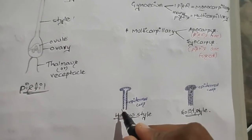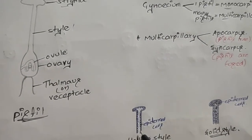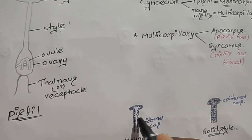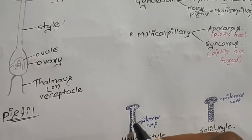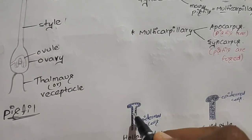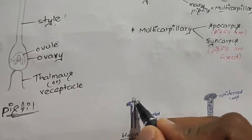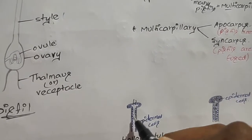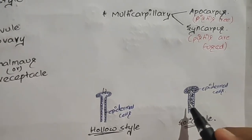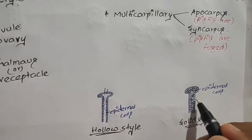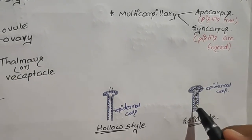In the hollow style, the outer layer is surrounded by epidermis cells, and in between this outer surface a luminal space is present. In this space the pollen tube grows and reaches to the ovary. But in the solid style, between the epidermis cells other cells are present and these cells are completely packed.